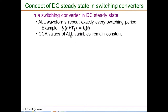In switching converters, even in steady state, all voltage and current waveforms are switching waveforms — they are time-varying. So we cannot define DC steady state as a condition where all waveforms are exactly constant. Instead, the correct definition is that the cycle-by-cycle average values of all voltages and currents remain constant — equivalently, all waveforms repeat exactly every switching period, so the pole current at T plus T_S equals the pole current at T.